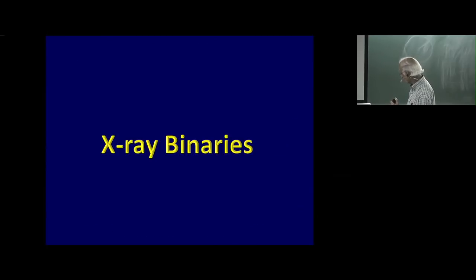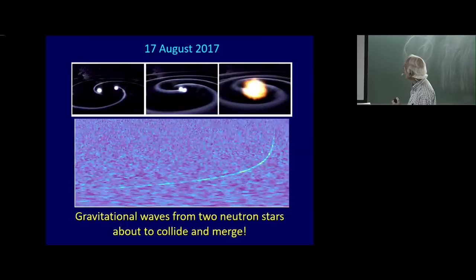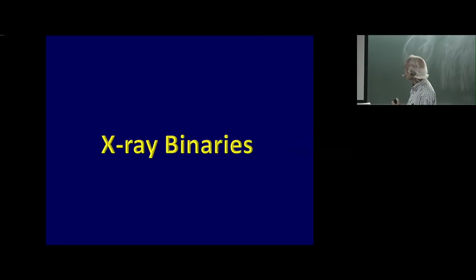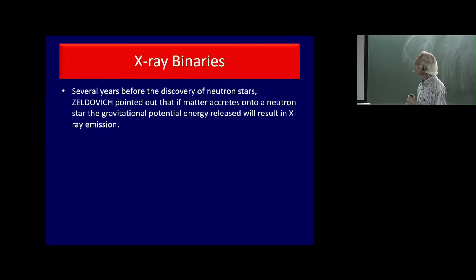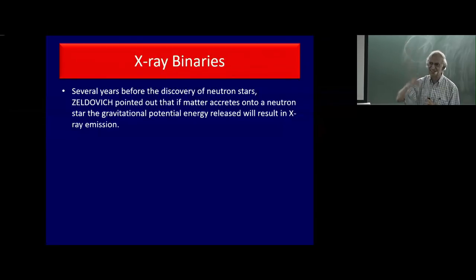The question therefore arises: how do these binary systems form? Let's go to the beginning. Long before neutron stars were discovered, the great Zeldovich in Moscow pointed out — when neutron stars were still a hypothetical conjecture, to be found only in Landau and Lifshitz's statistical physics —